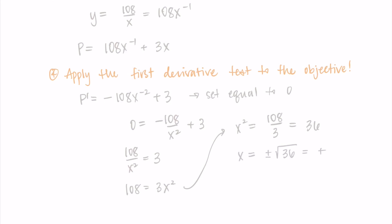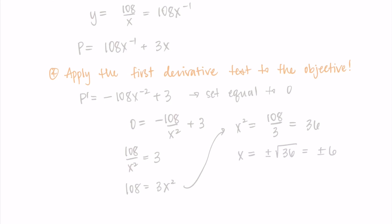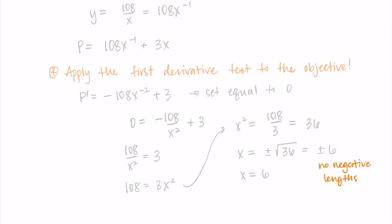So I'm getting the plus or minus six. But since this is a real world situation, we can't have a negative X value, we can't have a negative length on our chicken coop. So I'm just going to take the positive value. So X equals six is our critical number that we are hoping corresponds to the minimum for the perimeter.